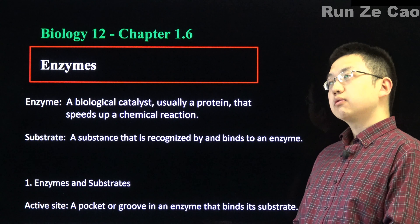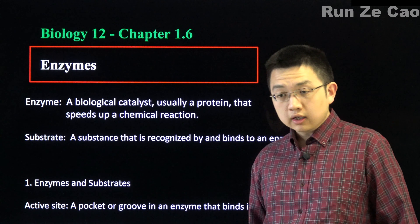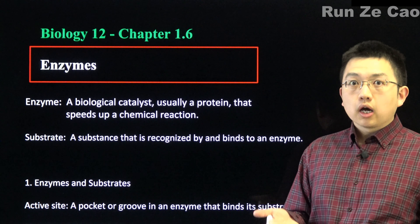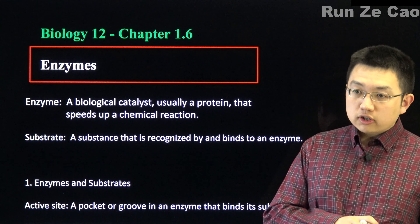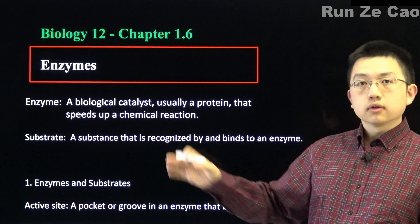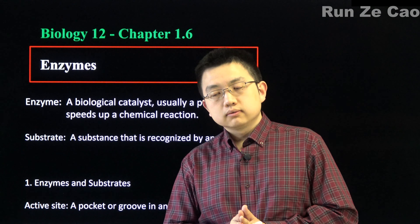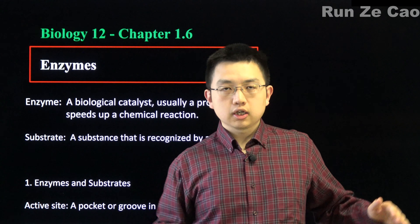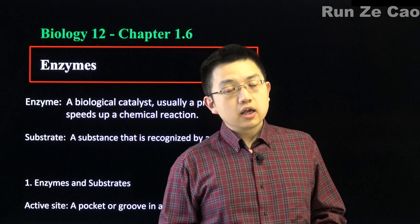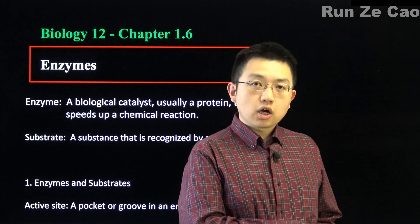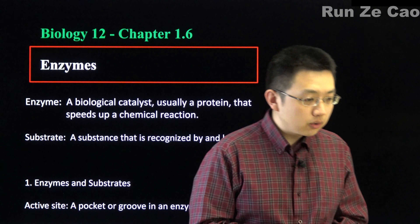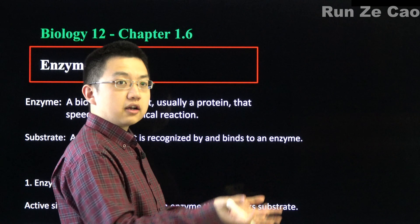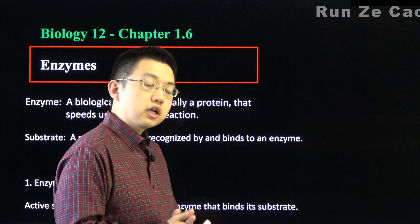Why is it that photosynthesis requires sunlight — incoming energy? Because energetically speaking, the resulting sugar or any intermediates pretty much have higher energy than what you started with. Whereas we know that sugar can be oxidized to release energy in cellular respiration.